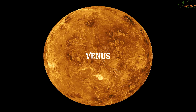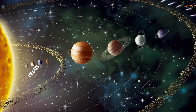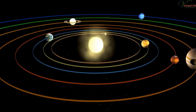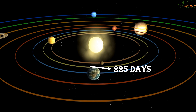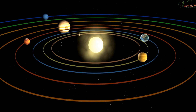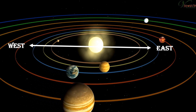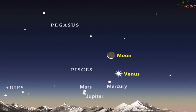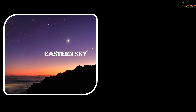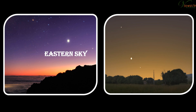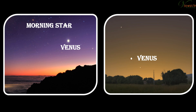Venus is the second closest planet to the Sun. It takes about 225 days to complete one revolution around the Sun. It has no satellites or moons. Venus rotates from east to west and is the brightest planet in the night sky. It appears in the eastern sky before sunrise and in the western sky after sunset. For this reason, Venus is called a morning star or an evening star, although it is not a star.